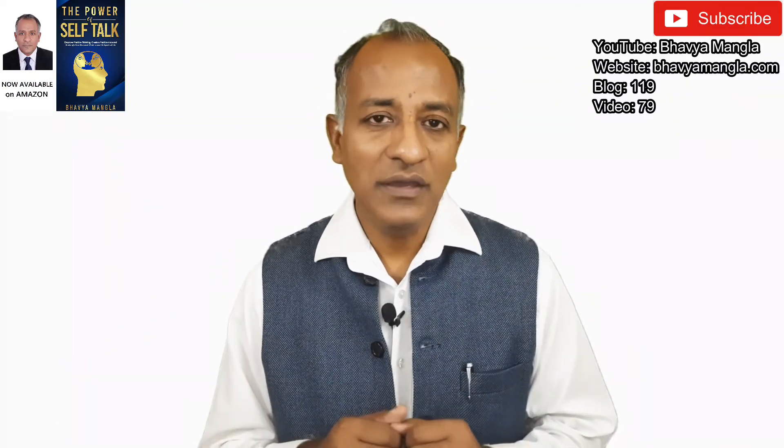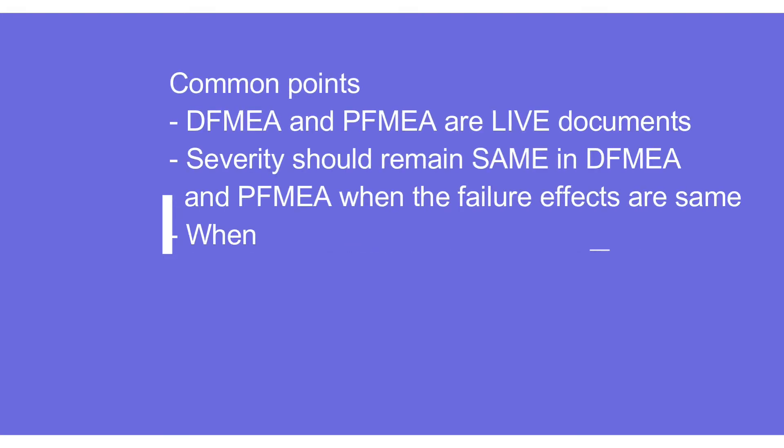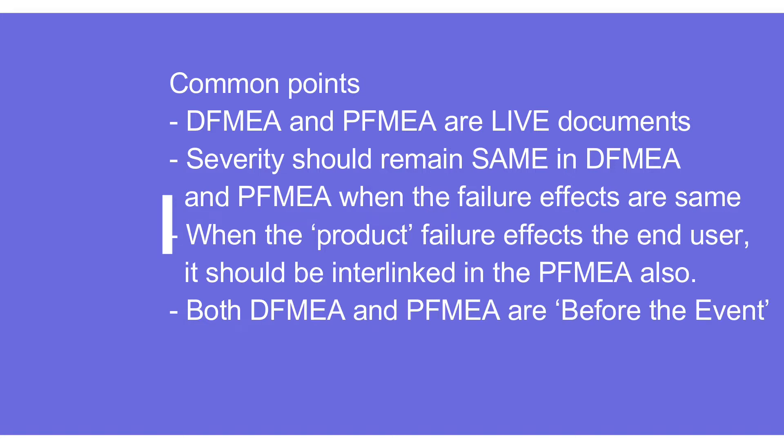Some commonalities between Design FMEA and Process FMEA: first, both are live documents. Second, the severities always remain the same in DFMEA and PFMEA when the failure effects are the same. Third, when the product failure affects the end user, the same thing should be interlinked while making the PFMEA. Fourth, both DFMEA and Process FMEA are before-the-event exercises.